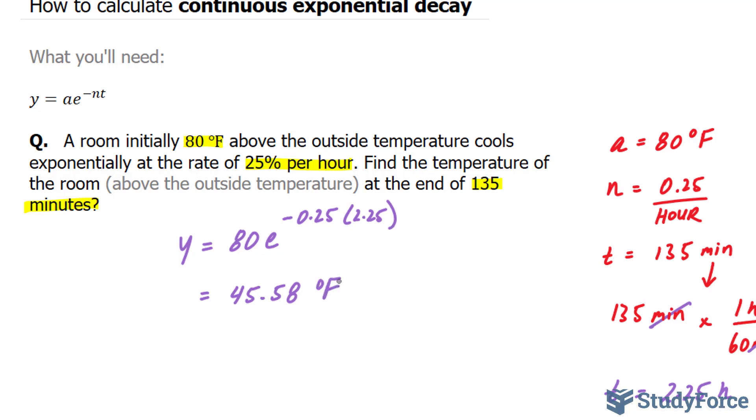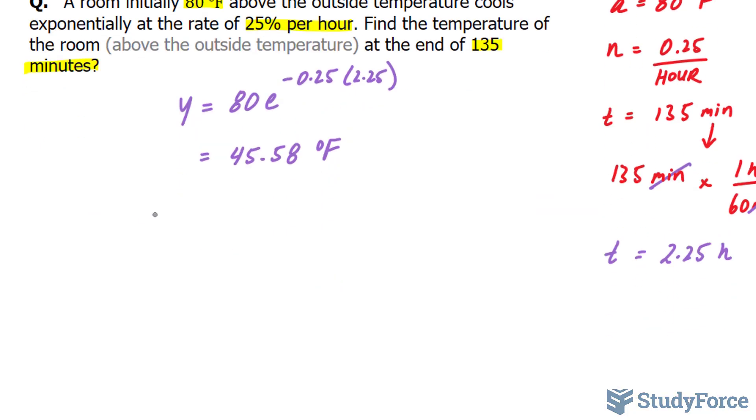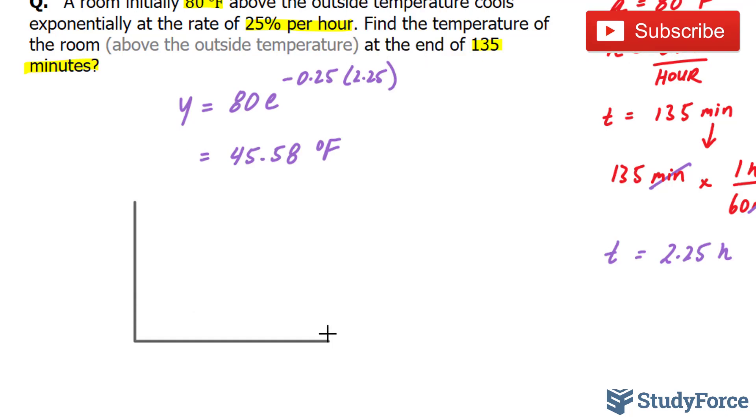Let's discuss what's happening here. A room initially is 80 degrees Fahrenheit. So if we look at this on an x and y plot, where our x-axis represents the time and the y-axis represents the temperature, we start off at 80 degrees.